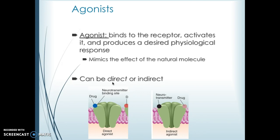When the agonist affects the receptor site, it mimics the natural molecule, and this can be either a direct or an indirect effect. The drug itself doesn't necessarily have to bind at the same site as the neurotransmitter. You can have a drug that binds at a separate site on that receptor and still increase or activate the receptor. A common example is a benzodiazepine, which activates GABA receptors but does not bind to the same place that GABA would — it binds to a completely different site on that receptor.